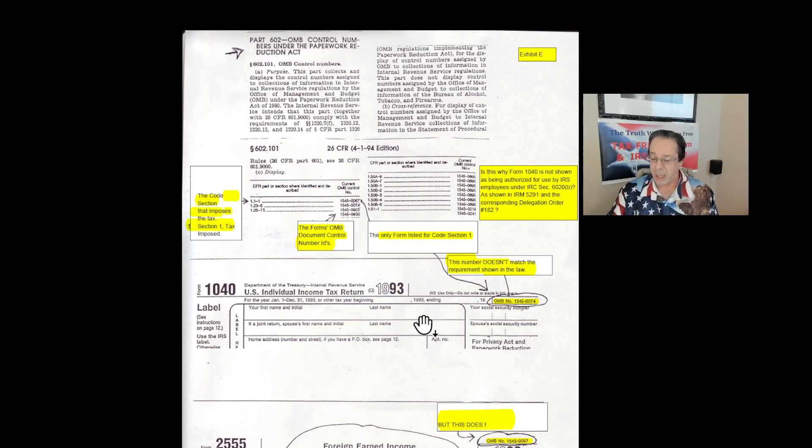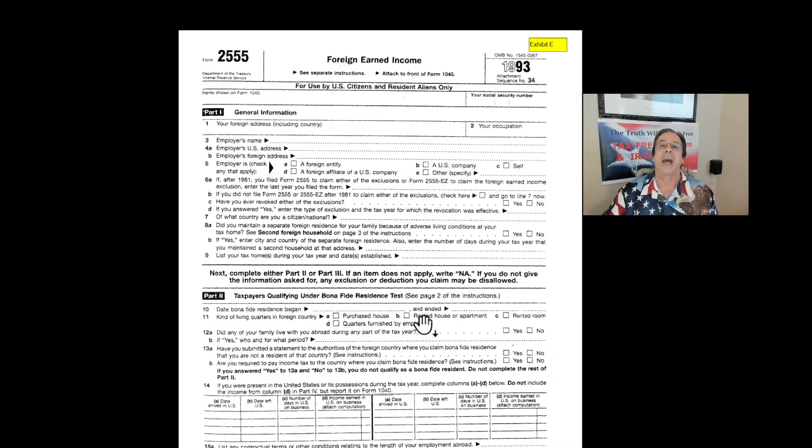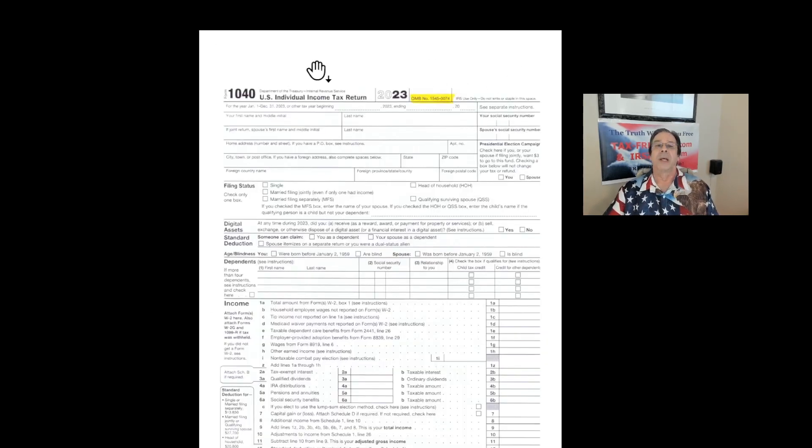So let's look. Form 2555 Foreign Earned Income, here's the whole thing. Here's the OMB document control number: 1545-0067. Here's the Form 1040 from 2023. Here's the OMB document control number: 1545-0074.